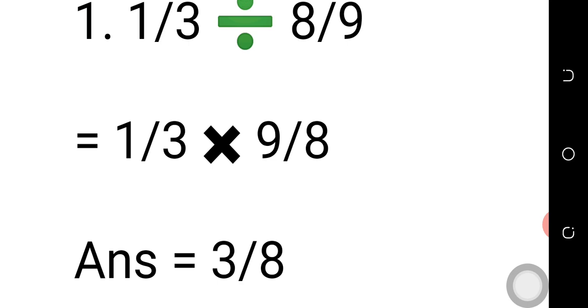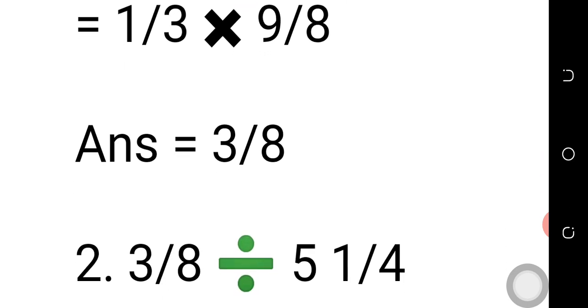Three into three is one, three into nine is three. So one multiplied by three gives us three, while one multiplied by eight gives us eight. Therefore our answer is three over eight. That is the first question.